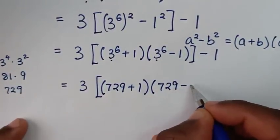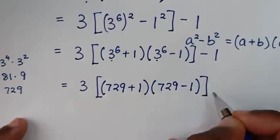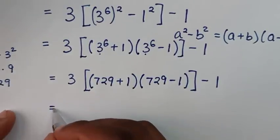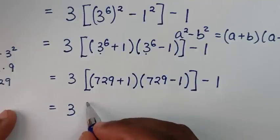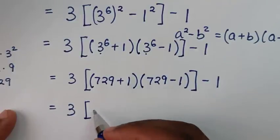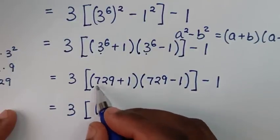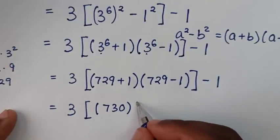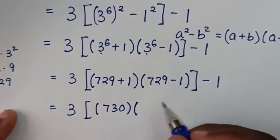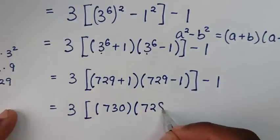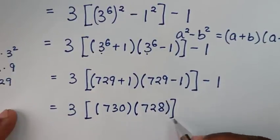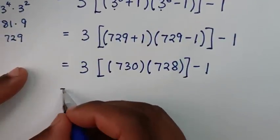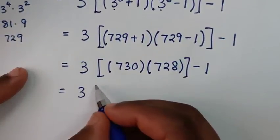Then it will be equal to 3. Here it will be 729 plus 1 in the bracket, times 729 minus 1 which is 728 in the bracket, then minus 1.